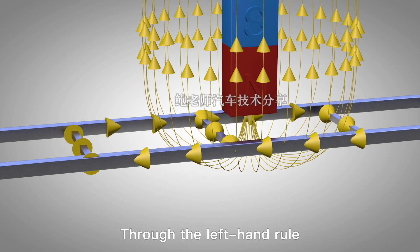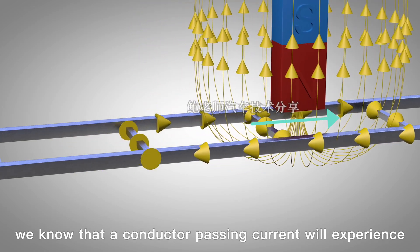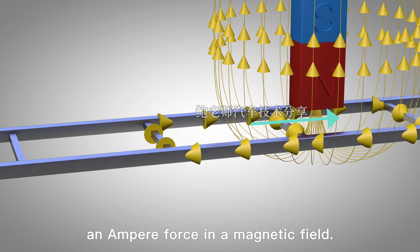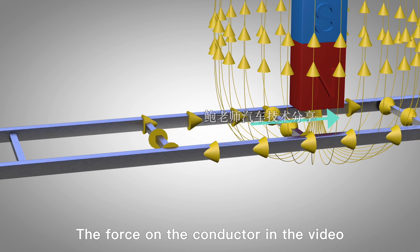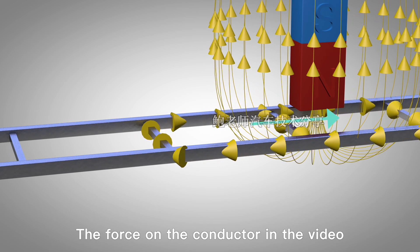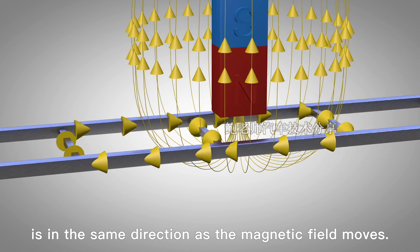Through the left-hand rule, we know that a conductor passing current will experience an Ampere force in a magnetic field. The force on the conductor in the video is in the same direction as the magnetic field moves.